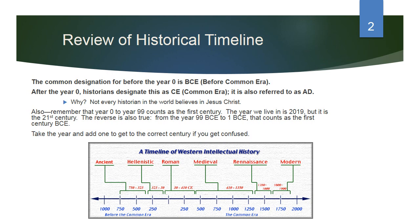This is something people always get confused about, so I always like to review it. The common designation for the year before year zero is BCE, Before the Common Era. We don't tend to use BC by itself anymore because there are a lot of Christians who believe in Christ, but there are also about four or five billion people who don't include Christ in their religious or historical references. After the year zero, historians designate this as CE, the Common Era, often also referred to as AD — Anno Domini, meaning the year of the Lord.